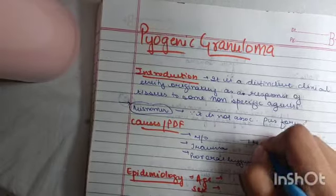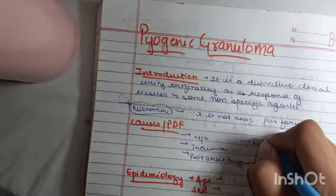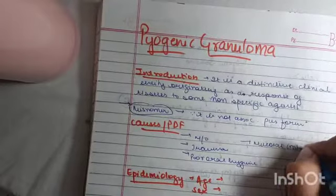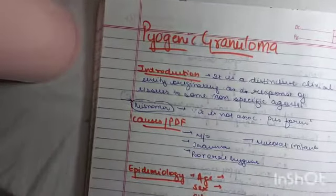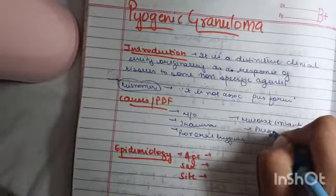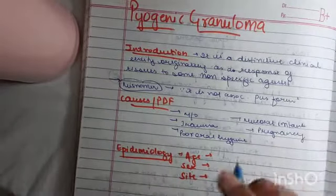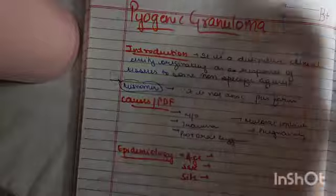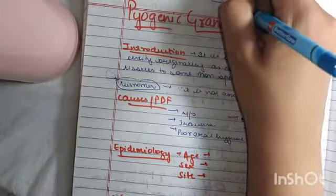Or some mucosal irritants. Also in predisposing factors, pregnancy is one. Other names, it is also called as a pregnancy tumor.